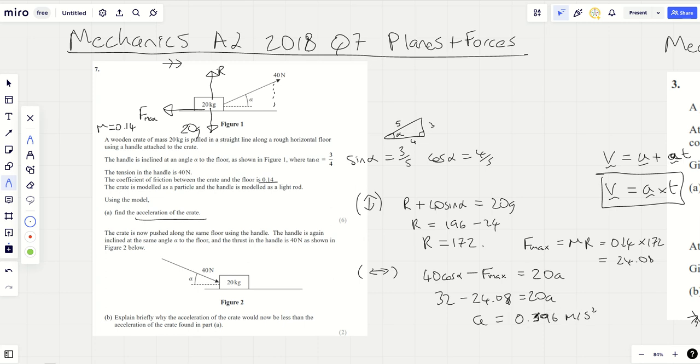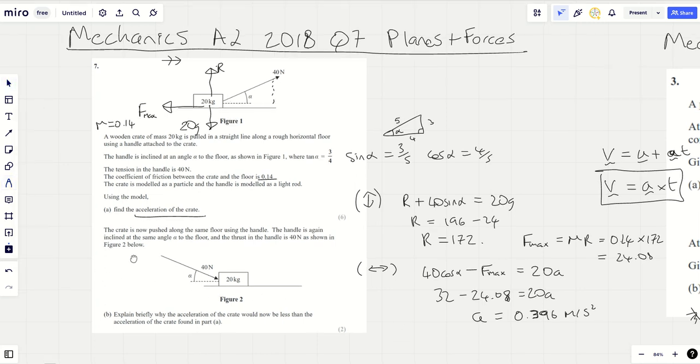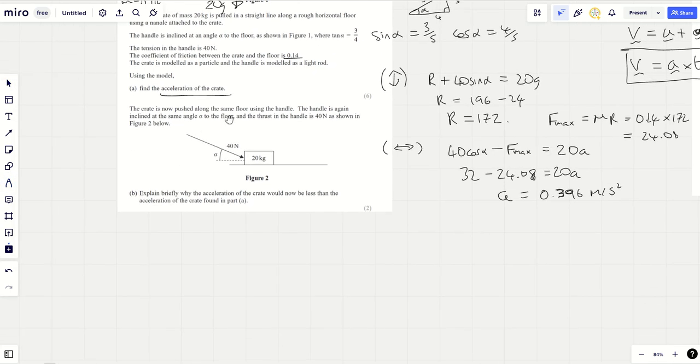Part B: the crate is now pushed along the same floor. It's being kicked downwards. The handle was inclined at the same angle alpha to the floor and the thrust in the handle was 40 newtons as shown in figure two. Explain briefly why acceleration of the crate would now be less than the reaction acceleration.